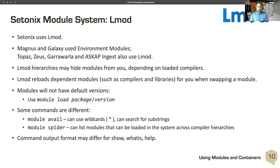Modules on Cetonix: the module system uses LMOD. Magnus and Galaxy used environment modules, but a number of other systems use LMOD. LMOD uses hierarchies — modules can have similar names but exist in different parts of the hierarchy, and some modules may be hidden. They're dependent on loaded compilers. LMOD will automatically reload dependent modules when you're swapping modules. A key change is that you cannot load a module without specifying a version — before on Magnus you could do 'module load package-name' and that was enough, but that is not the case on Cetonix. If you don't provide a version, the module system will try to suggest versions.